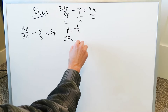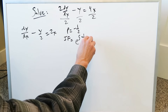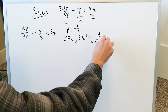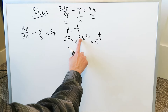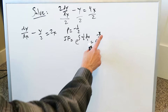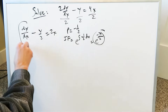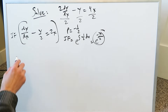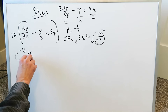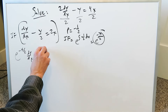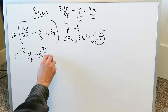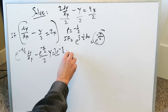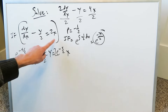Your integration factor is determined as e to the integral of minus 1 over 2 dx, which gives e to the minus x over 2. This integration factor multiplies with everything. You'll have e to the minus x over 2 times dy/dx minus e to the minus x over 2 over 2 times y is equal to e to the minus x over 2 times 2x. It's just distributing across.